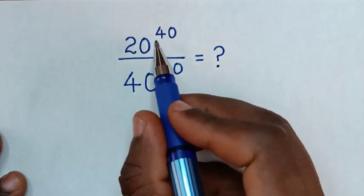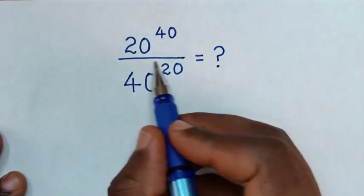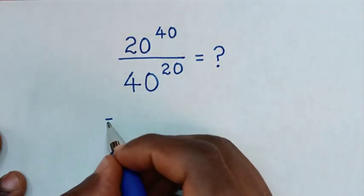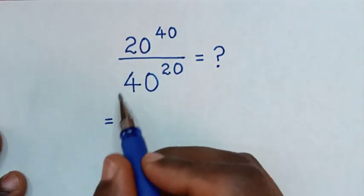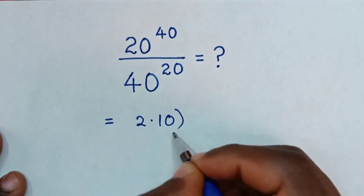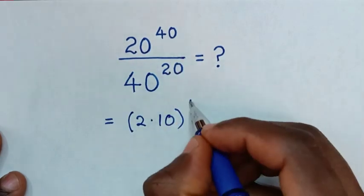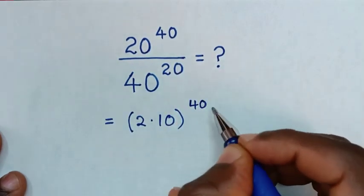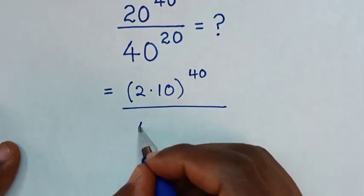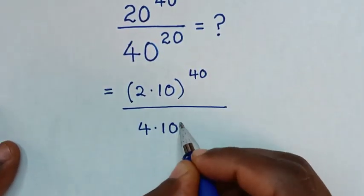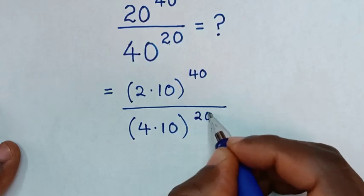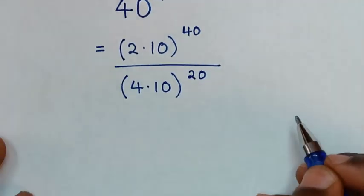How to solve 20 power 40 over 40 power 20. It will be equal to: 20 is the same as 2 times 10, then bracket to the power of 40, over 40 is the same as 4 times 10, then bracket to the power of 20.